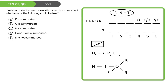Here's the next question: if neither of the last two books discussed is summarized, which one of the following could be true? We slash out weeks five and six in the bottom row. Since R must go into either week five or six and won't be summarized, by the contrapositive of rule two, N must have a summary. Add that to the game board or tree to track it. Take inferences as far as you can, then compare against the answer choices.